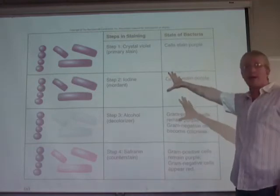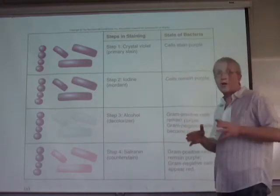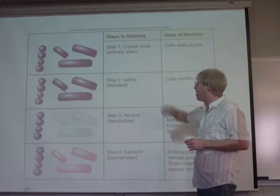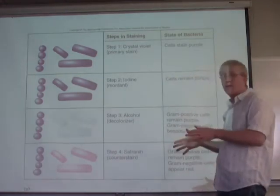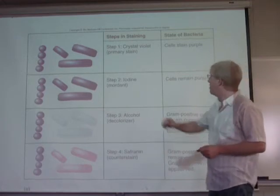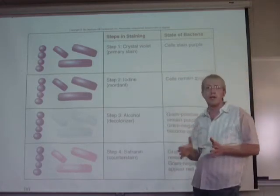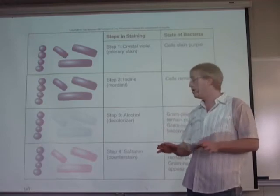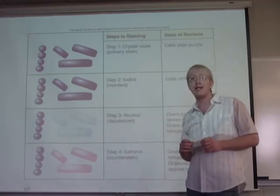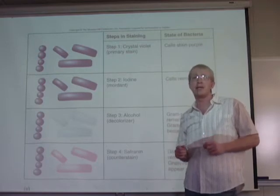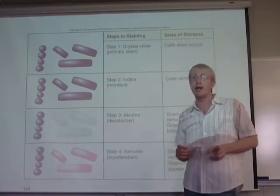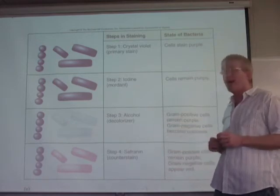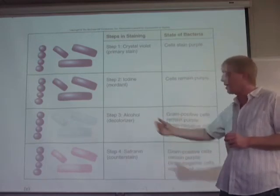This slide summarizes the full procedure. We start by heat fixing the bacterial specimen to a slide, then add the primary stain of crystal violet, let it sit for a minute, and rinse with distilled water. Next, we add the mordant Gram's iodine to fix the stain to gram positive bacteria, let it sit, and rinse with water. Then we add alcohol to decolorize the gram negative bacteria, rinse with water, and add the counterstain safranin, giving us gram positive purple and gram negative pink bacteria.